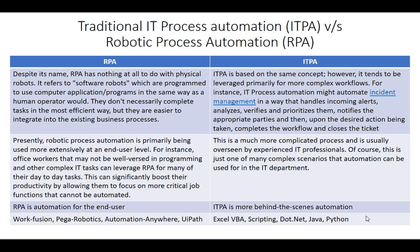Robotic process automation is primarily being used more extensively at the end-user level. For instance, office workers who may not handle complex IT tasks can leverage RPA for many of their day-to-day tasks to automate. This can significantly boost their productivity by allowing them to focus on more critical job functions that cannot be automated.